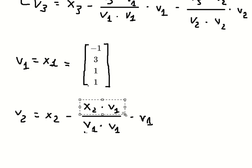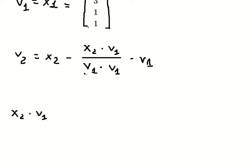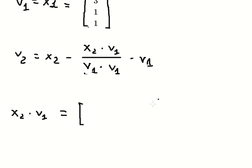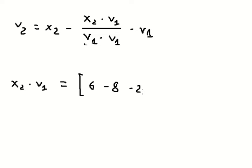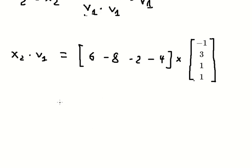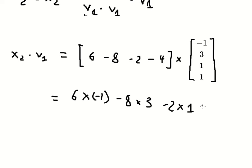For v2, we need to find S2 dot v1. S2 is this vector here, which gives us the values 6, negative 8, negative 2, negative 4. We multiply by v1. So we have: 6 times negative 1, negative 8 times 3, negative 2 times 1, negative 4 times 1. We calculate this and we get negative 36.